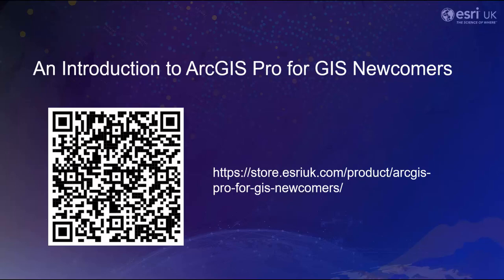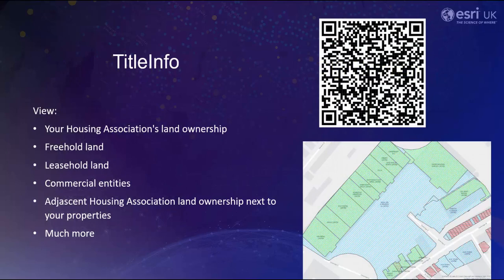Let's start off by talking about the datasets we'll be using. Title Info allows you to view your housing association's land in addition to freehold land, leasehold land, commercial entities, adjacent housing associations next to your properties and much more. It's a premium data service available from Esri UK which provides access to information on title plans published by the Land Registry.